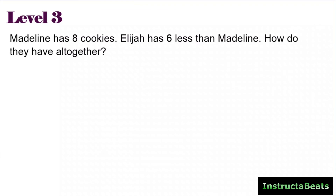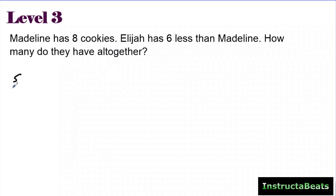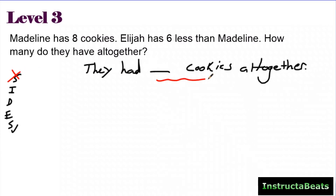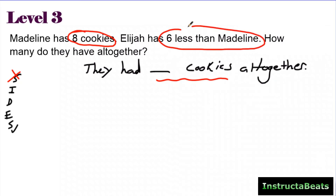Now we're getting to level three. The level three question says: how many do they have all together? I'm beginning with the end in mind by writing my statement: they had blank cookies all together. I go back looking for keywords or anything about cookies. It says Madeline has eight cookies and Elijah has six less than Madeline. This tells me I'm doing additive comparison and comparing Madeline and Elijah. At the end, I'm going to be bringing something together to find my answer.